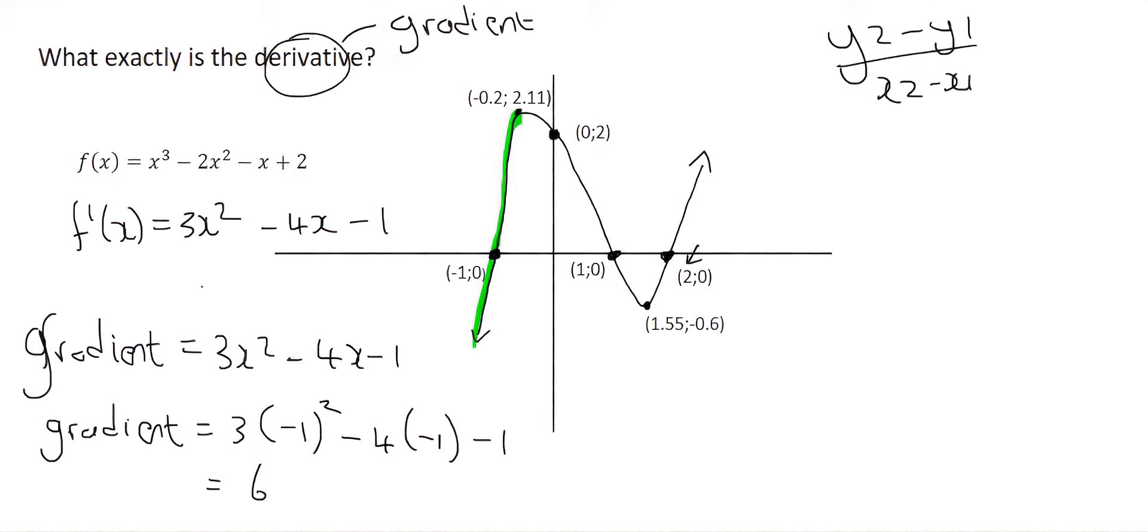And what we end up with there is an answer of 6. So that means that the gradient, where x is minus 1, is 6. It doesn't mean the whole part of the green is 6. It means over there it's going to be 6.